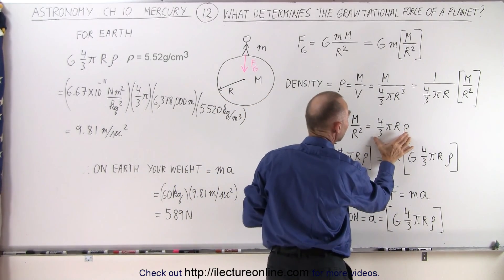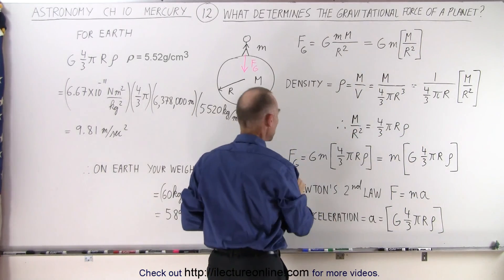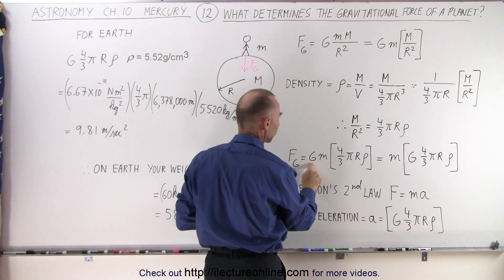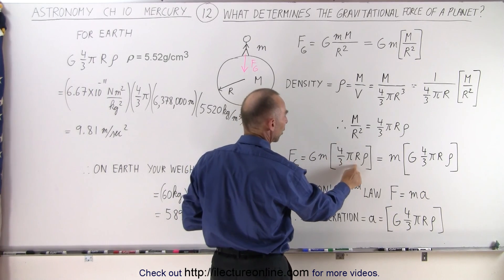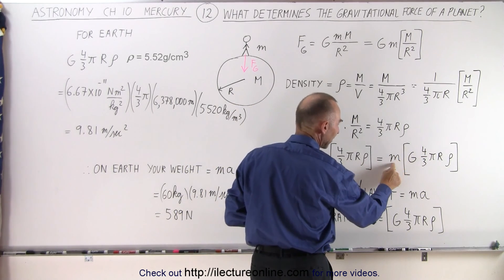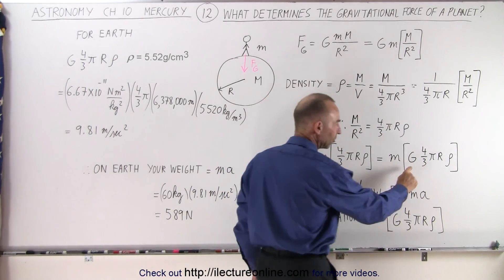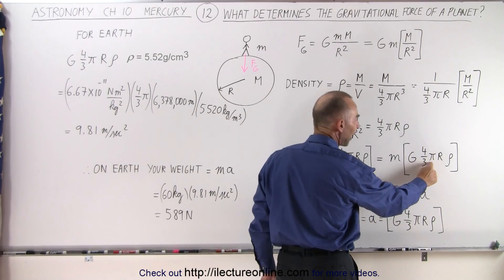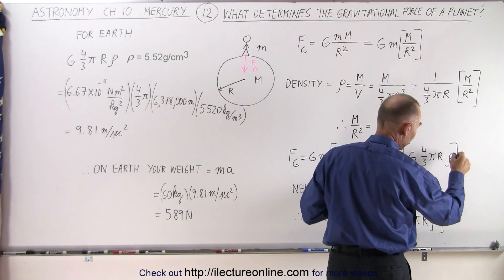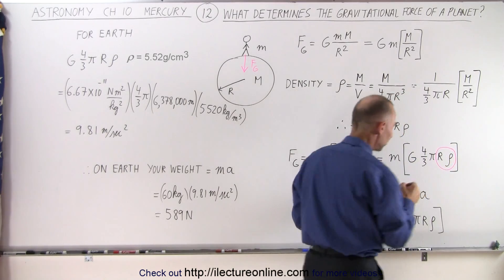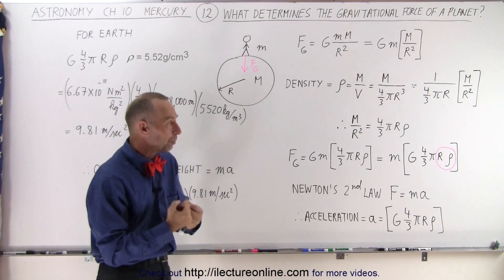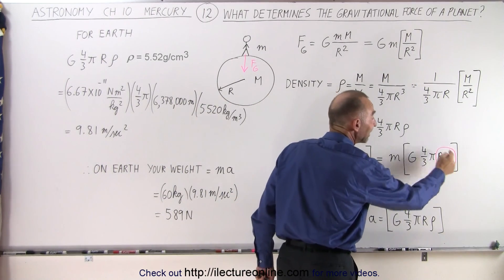If we take this quantity and substitute it in place of m over r squared, we now have the force of gravity — the force by which a person gets pulled towards the planet — equal to the gravitational constant times the mass of the person times four-thirds pi r times rho. Factoring out just the mass of the person, the only things that vary in that equation, besides the mass of the object, are the radius and the density of the planet. In other words, the force by which an object gets pulled towards a planet depends upon how big the planet is and the density of the planet.